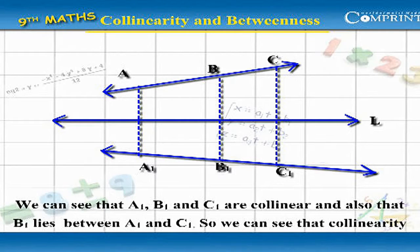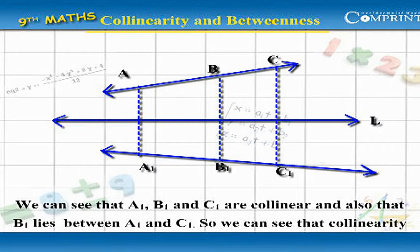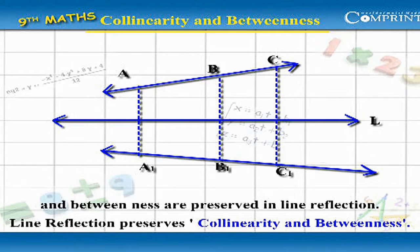We can see that A1, B1 and C1 are collinear, and also that B1 lies between A1 and C1. So collinearity and betweenness are preserved in line reflection.